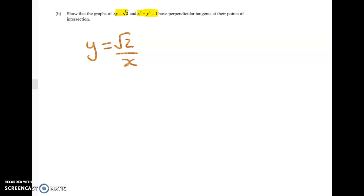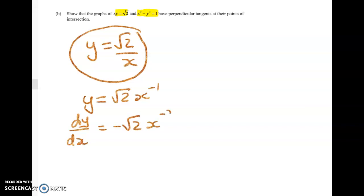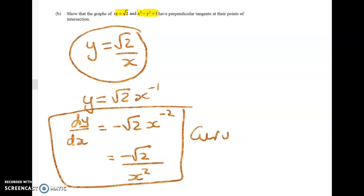The xy equals root 2 is not going to be good to work with. We could do implicit on it but it's far easier just to write y equals root 2 on x which I can then write as root 2 x to the negative 1. So dy by dx is equal to negative root 2 times x to the negative 2 or negative root 2 over x squared. And so we're going to call that curve 1.